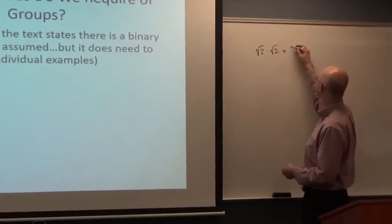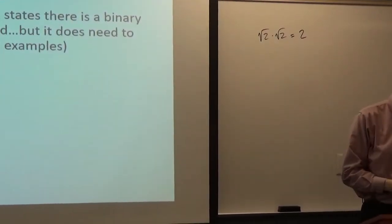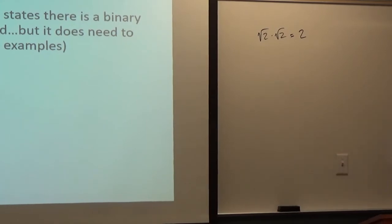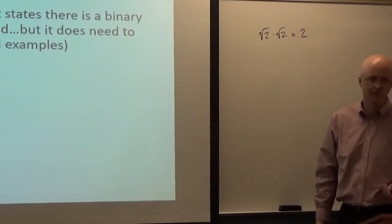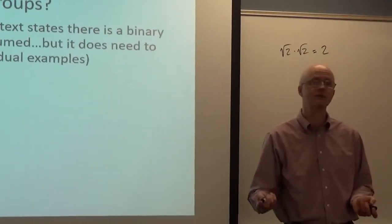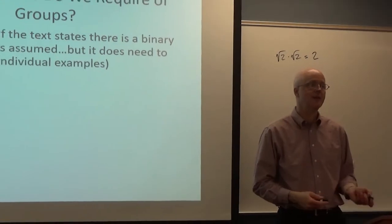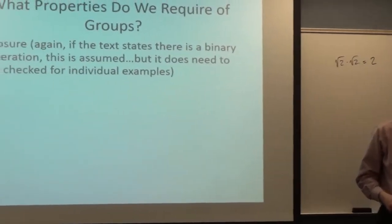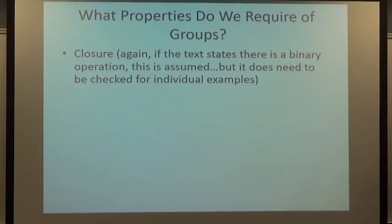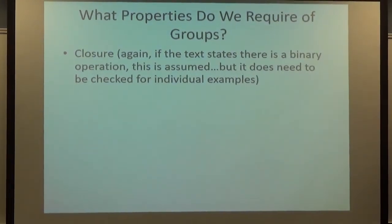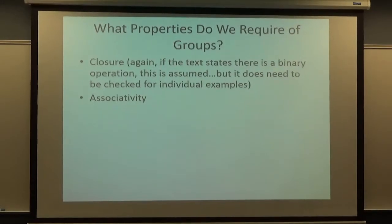Under multiplication, the irrationals are not closed. For example, square root of 2 times itself is 2, which is not irrational. It's also not 1. So you do need to check it for some specific examples. But again, as far as the definition goes, the book says it's a binary operation. That is going to automatically mean it's closed. What's the next property? Is it the associative property? Associative property. Yep. Associativity.